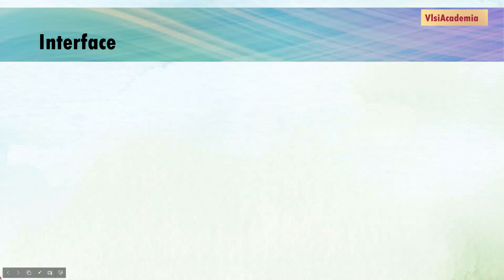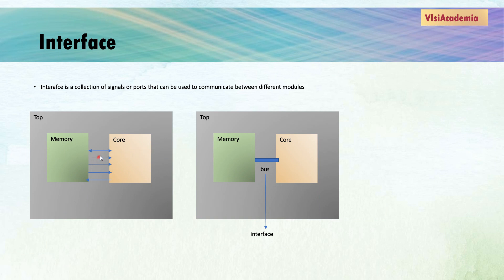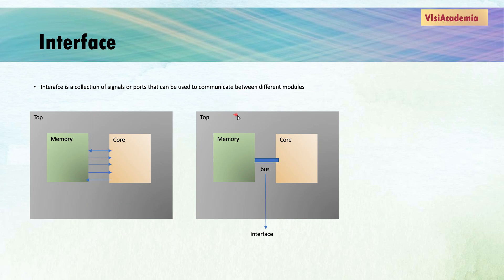Interfaces are a collection of signals or ports that can be used to communicate between different modules. An interface is a new kind of design block that captures inter-module communication in one place. In the traditional approach, we are defining all the signals in the module memory and core modules and then doing the connections. But with an interface, you can define all those signals as a bundle in one separate place, and then use that interface to connect memory and core modules as a bundle.